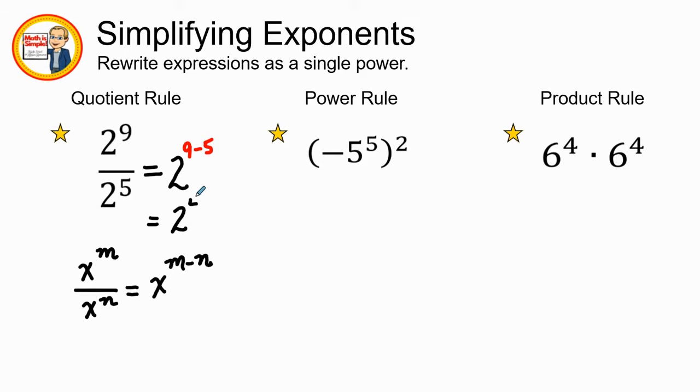When we simplify further in our final simplification, we keep our base as two and nine minus five is four. Now we can simplify just a little bit more: two times two is four, times two more is eight, times two more is 16. So fully simplified, the correct answer of two to the ninth power divided by two to the fifth power equals 16.